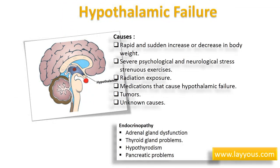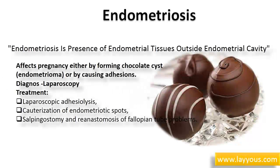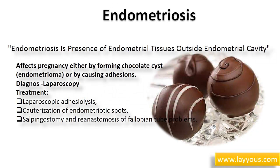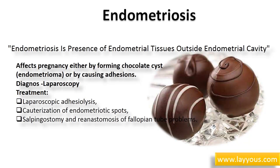Endocrinopathy includes adrenal gland dysfunction leading to a hyperandrogenic state, thyroid gland problems — hypothyroidism causes hyperprolactinemia, and hyperthyroidism affects hormones necessary for follicular maturation — and pancreatic problems such as diabetes. Endometriosis is the presence of endometrial tissues outside the endometrial cavity. It affects pregnancy either by forming chocolate cysts or endometriomas, or by causing adhesions. Diagnosis is usually done by laparoscopy; treatment includes laparoscopic adhesiolysis, cauterization of endometriotic spots, salpingostomy, and reanastomosis of fallopian tube problems.